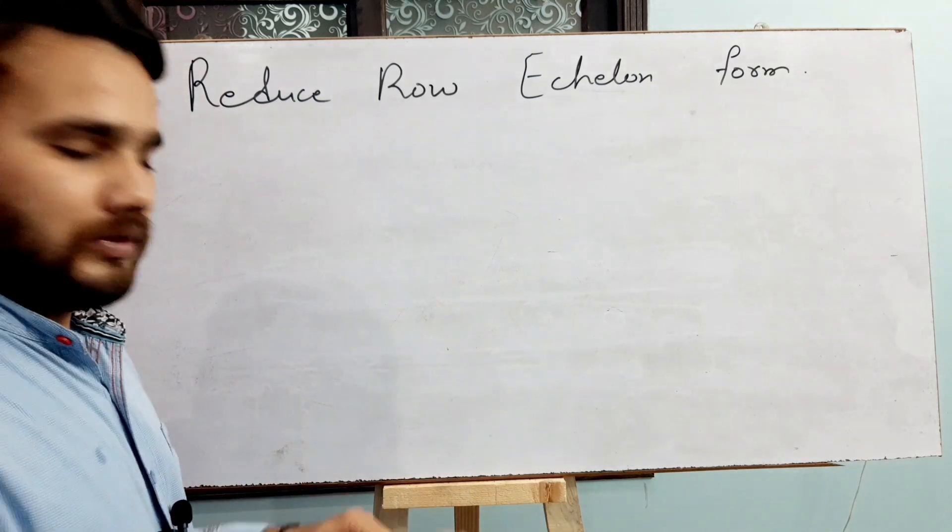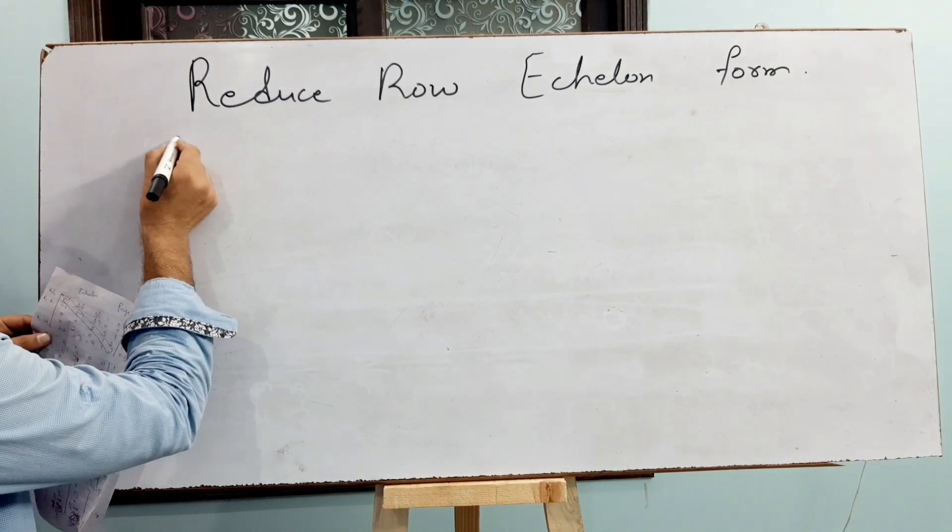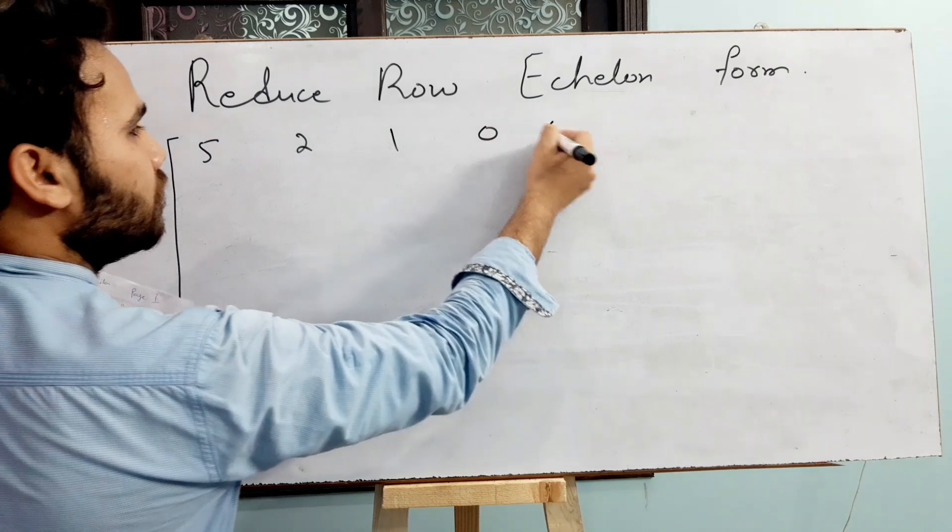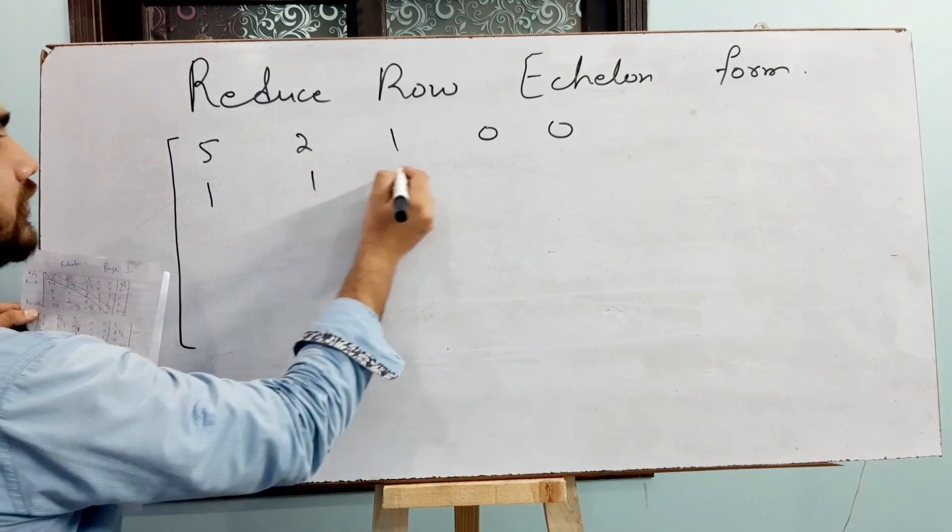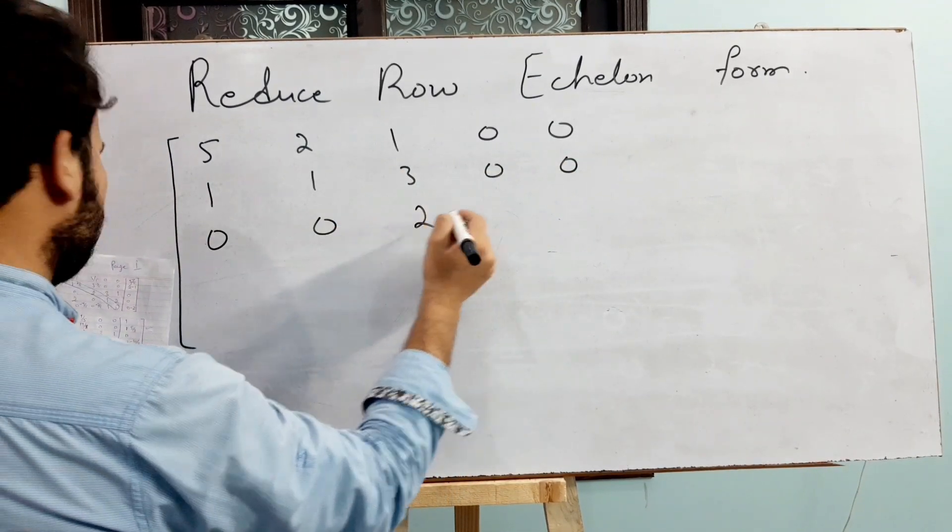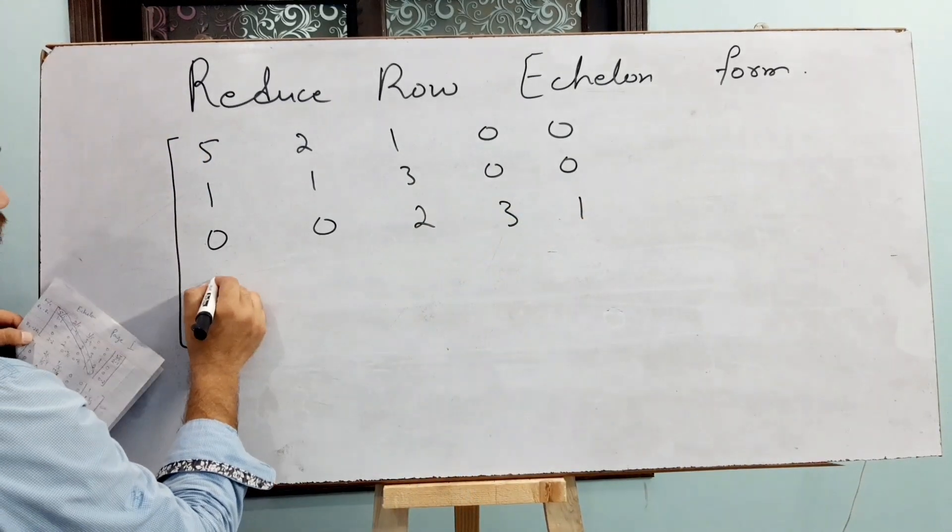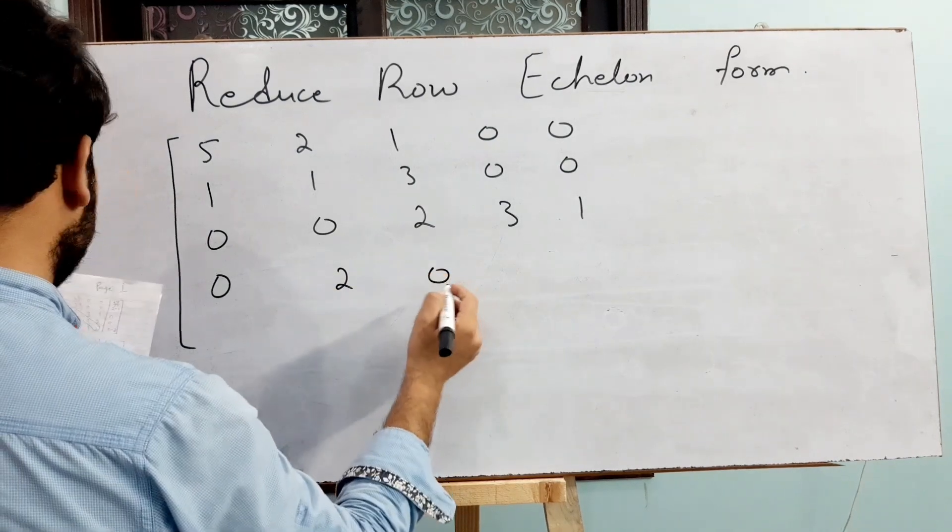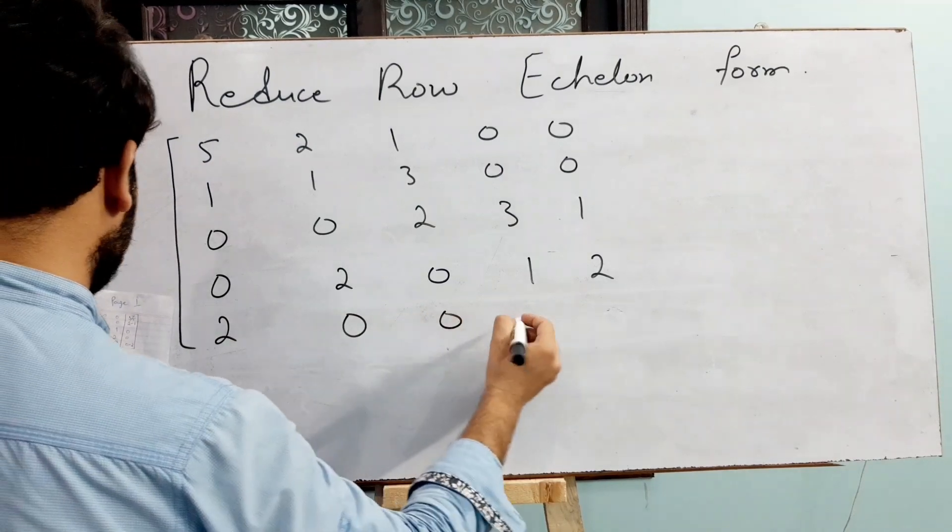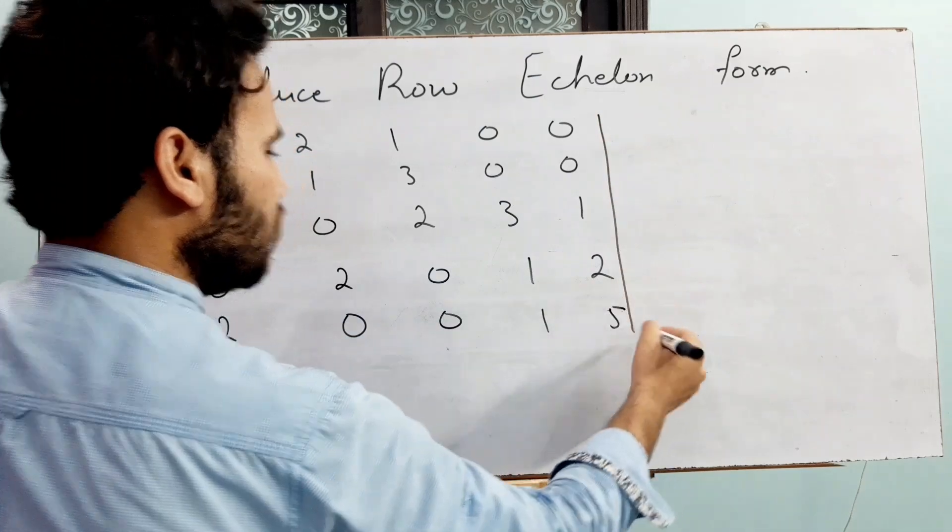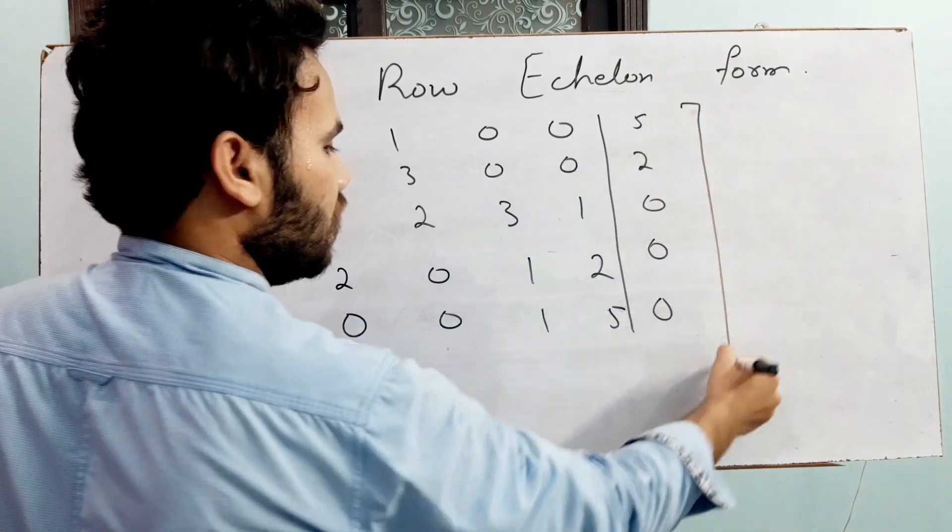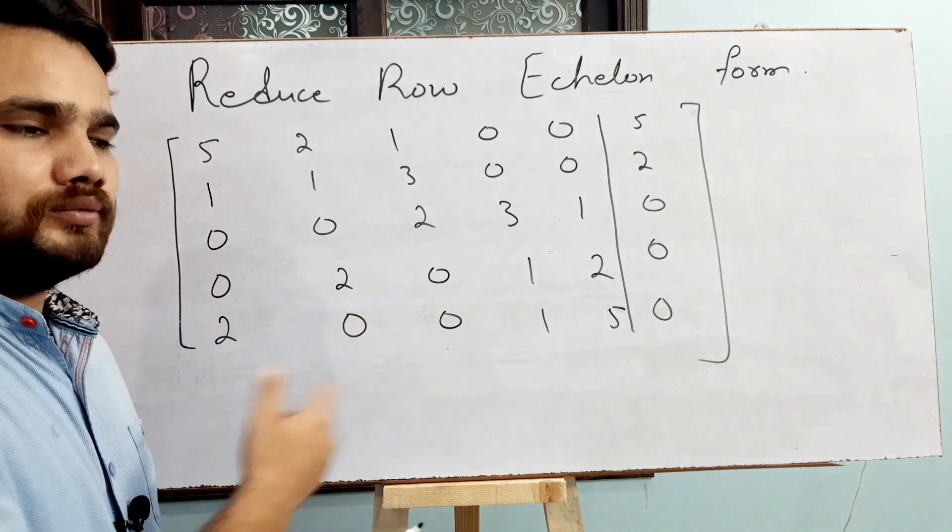The corresponding matrix for this system will be: 5, 2, 1, 0, 0, 1; then 6, 5, 2, 1, 0, 0, 1, 1, 3; next row 0, 0, 0, 1, 2, 2, 3, 1; then 0, 2, 0, 1, 2, 2; and finally 0, 0, 1, 5, 5, 2, 0, 0, 0. So this is the corresponding matrix from the system.